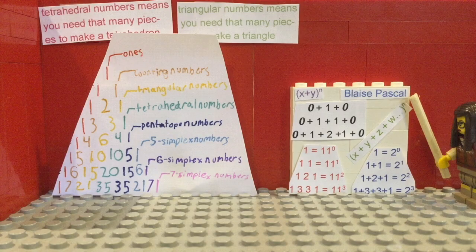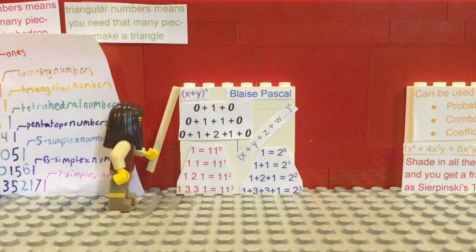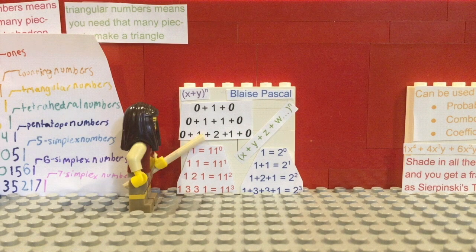It is named after French mathematician Blaise Pascal. Pascal's Triangle can be represented with the equation x plus y to the power of n, where n is the row number.